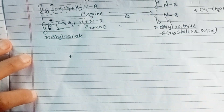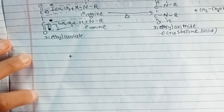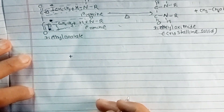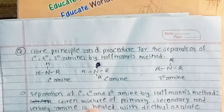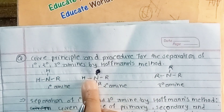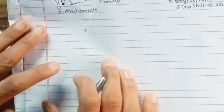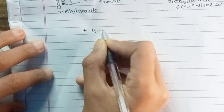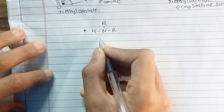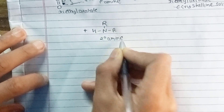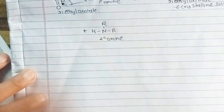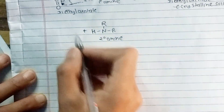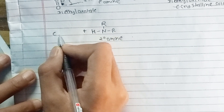One molecule of secondary amine, H-N-R2, reacts with diethyl oxalate. Two molecules of primary amine give secondary amine separation. One molecule of two degree amine reacts with diethyl oxalate.